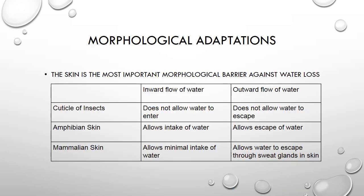Another category of adaptations is morphological adaptations. The most important morphological adaptation for water regulation is skin. We have created a small table to compare the skin of different terrestrial animals. Some organisms have skin that has adapted to reduce water loss. Arthropods secrete a cuticle from epithelial cells in their skin. The cuticle is composed of protein and chitin. Land arthropods, such as insects, have a waxy, water-resistant layer covering the cuticle called the epicuticle. The main function of the cuticle is to minimize water loss through the skin.